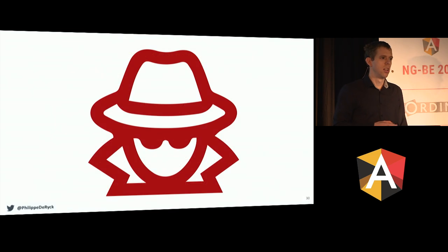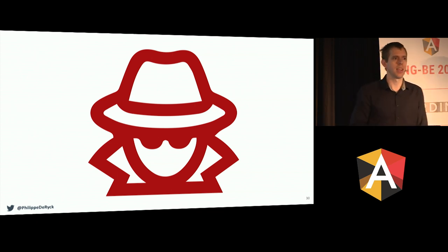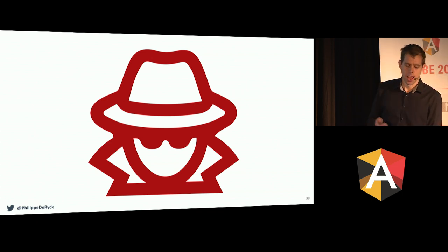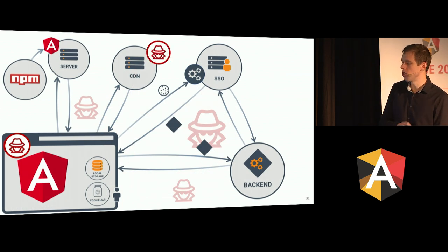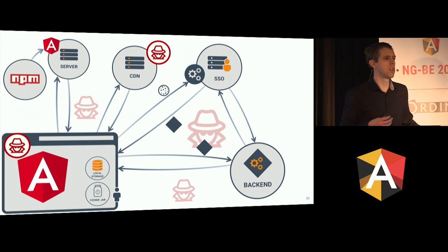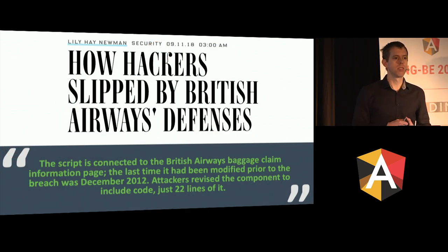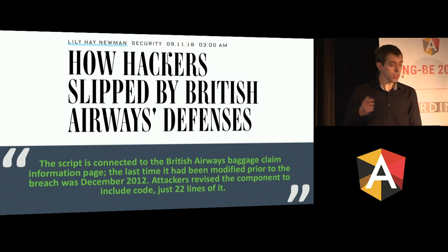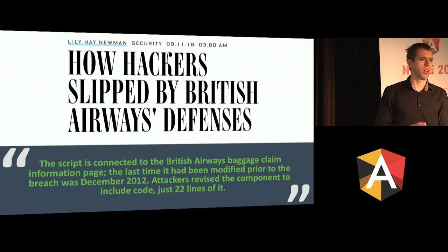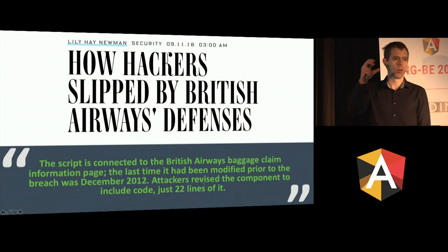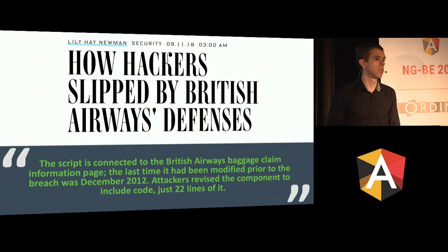But what if your application is vulnerable from the start — what if you're including malicious code right there in your application? This can happen if you pull in malicious resources from a CDN. If the attacker manages to change one of those files, you're pulling in malicious code and anything can happen. British Airways had this problem — somebody stole a lot of customer and credit card information because they had a third-party dependency loaded from a remote server that got compromised. The attacker added 22 lines of code that looked for their credit card input form, snagged the data, and shipped it off to a server somewhere. It's going to cost them millions in fines.